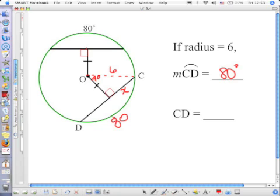Since this radius is perpendicular to the chord, then it has bisected the chord and it has bisected the arc that it creates.